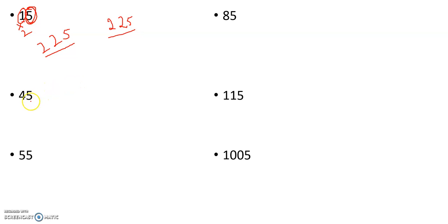For 45, you write 25 and multiply the number 4 with its next number 5. So 4 times 5 is 20, so 2025 is the square of 45.